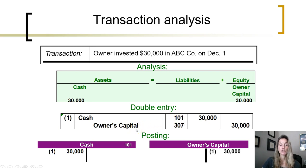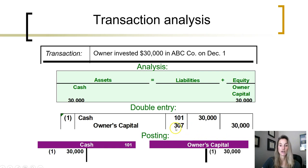Then we go to the next line in the journal. We need to credit owner's capital in the amount of $30,000. We take the credit to the general ledger, find the owner's capital account, and credit it $30,000. By crediting owner's capital $30,000, we have increased it because credits increase owner's capital. The account number for that account is 307. We take the account number back to the general journal into the post reference column to show that $30,000 has now been posted to account number 307, which is owner's capital.